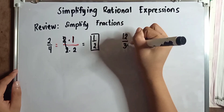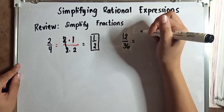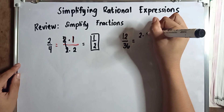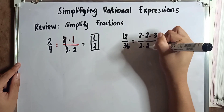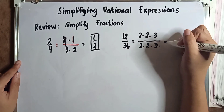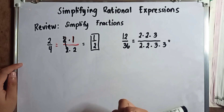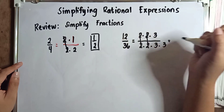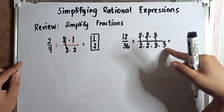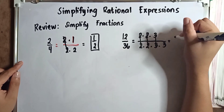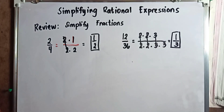How about 12 over 36? We need to get the prime factor of 12 and 36. The prime factor of 12 is 2 times 2 times 3, over 2 times 2 times 3. We will cancel out the common factors, which are 2 and 2, 2 and 2, and 3 and 3. What remains is 1 over 3. The simplified form of 12 over 36 is 1 third.